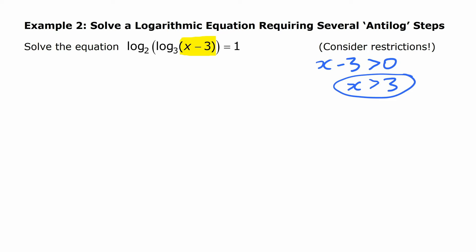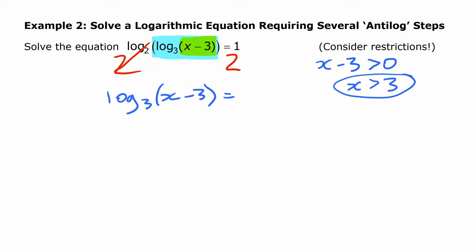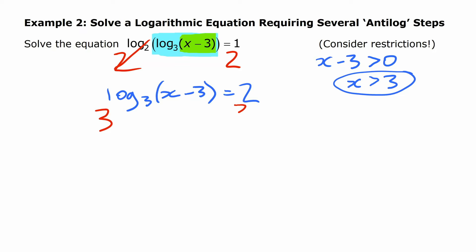The outermost log is log base 2 of this whole thing, so anti-logging both sides cancels it, and we're left with log base 3 of x minus 3 equal to 2 to the power of 1, which is 2. Now I've eliminated one of the log functions. This is still a single term, so I can anti-log base 3 next — that cancels it out, leaving x minus 3 equal to 3 squared, which is 9. It's a linear equation: add 3 to both sides, and I get 12.